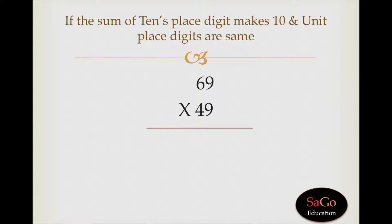In this video we'll see how to multiply two numbers when the sum of tens place digit makes 10 and unit place digits are same. In this sum, ones place digits are same as you can see 9 and 9 are there, and in the tens place digit 6 and 4 are there and those are making the sum of 10.